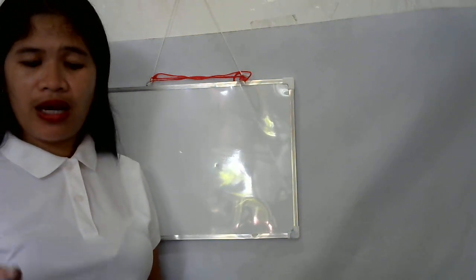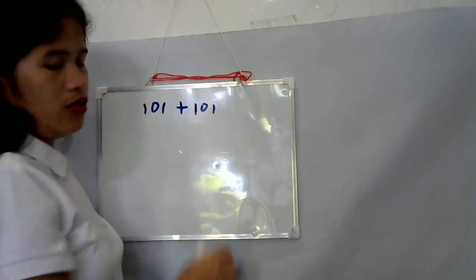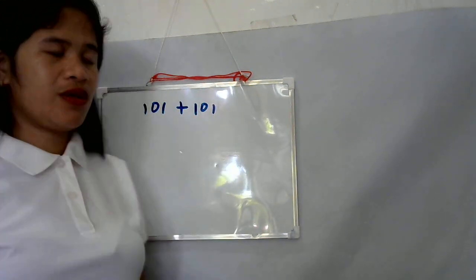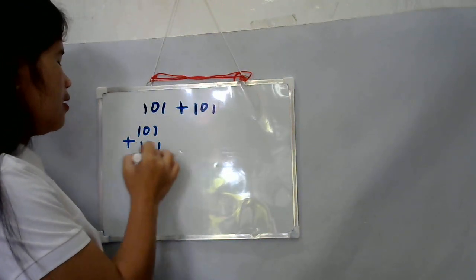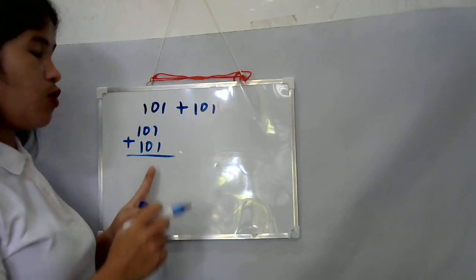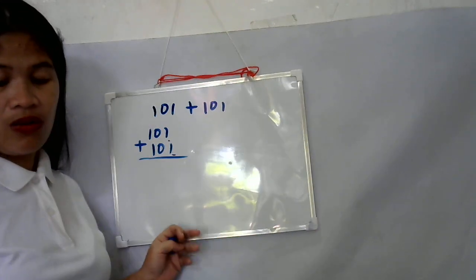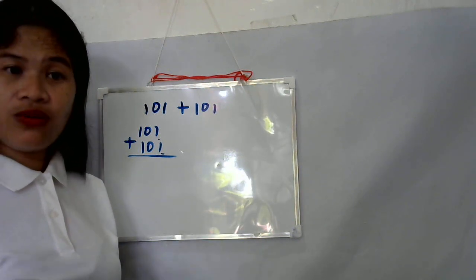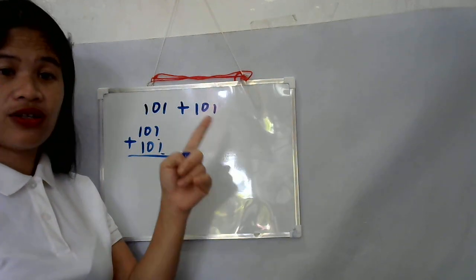For example, add the binary numbers 101 and 101. We will arrange this in two columns: 101 plus 101. First, you are going to consider the ones column. We are going to add, and in the rules, one plus one, the answer is always